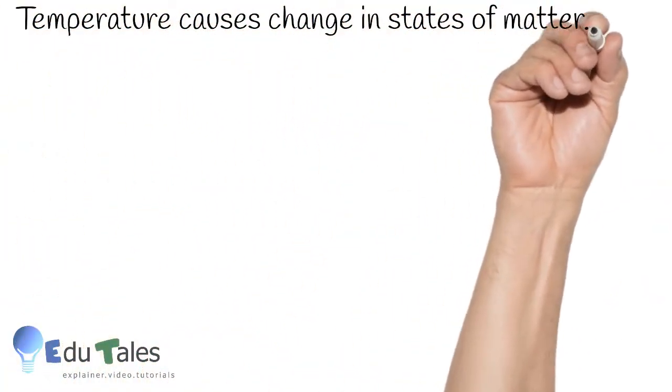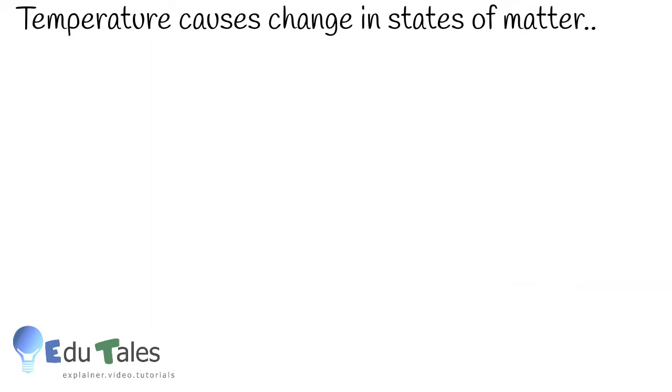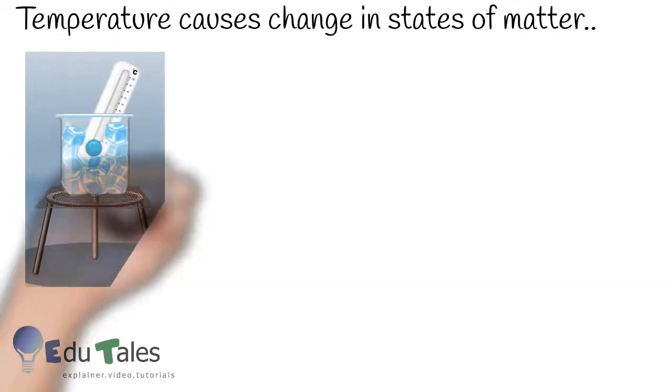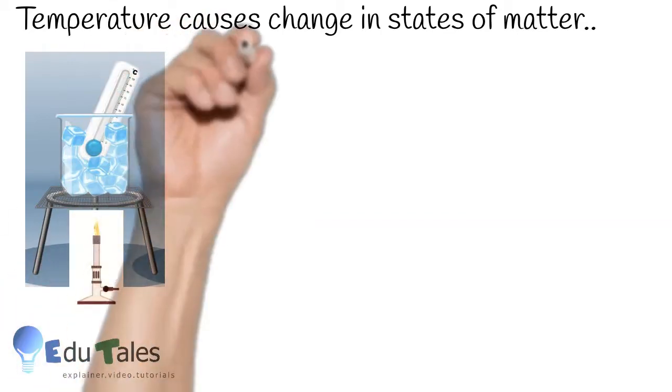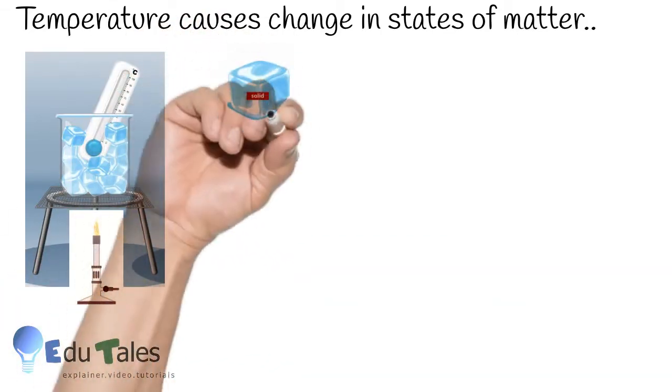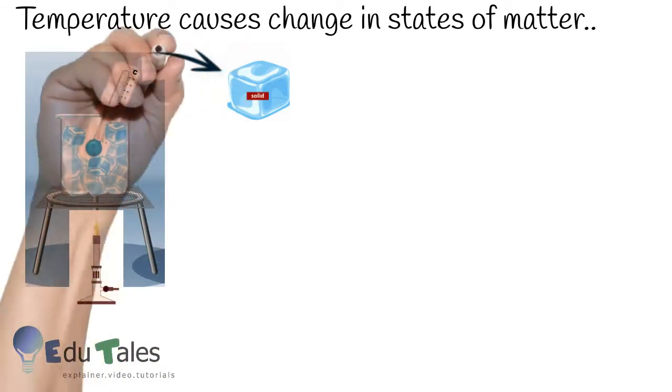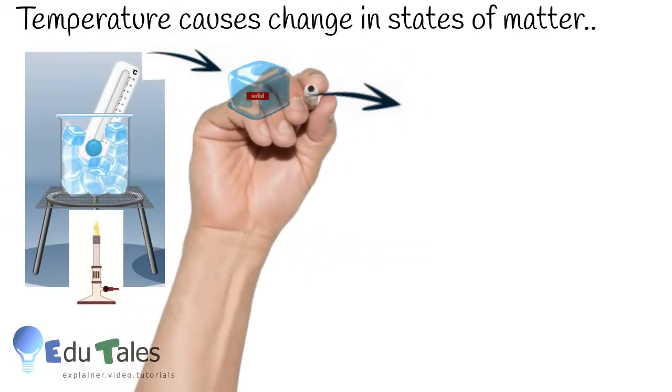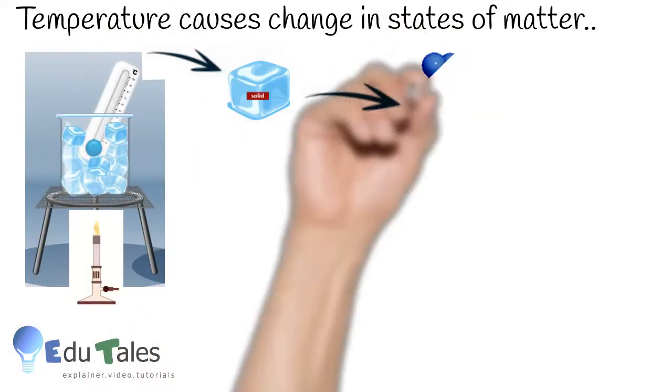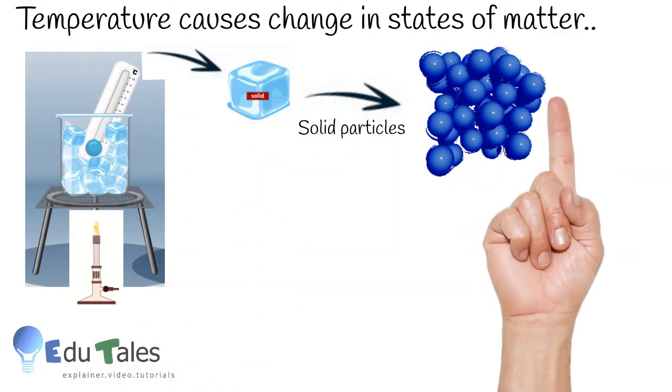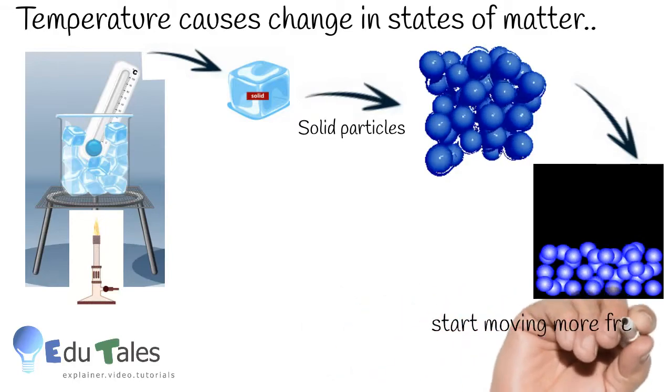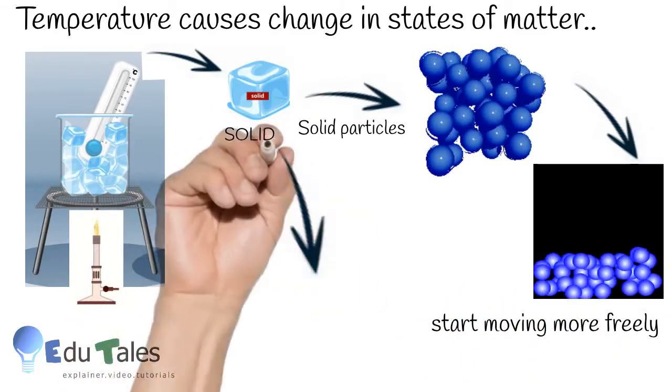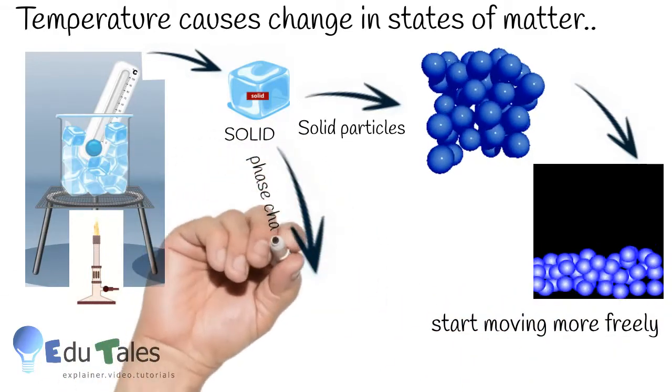Thus, rise or fall in temperature causes change in state of matter. When we increase temperature, heat is absorbed in the form of energy. The kinetic energy of the molecules of a solid increase on absorption of heat and they begin to vibrate with larger amplitude. The particles leave their fixed position and start moving more freely.